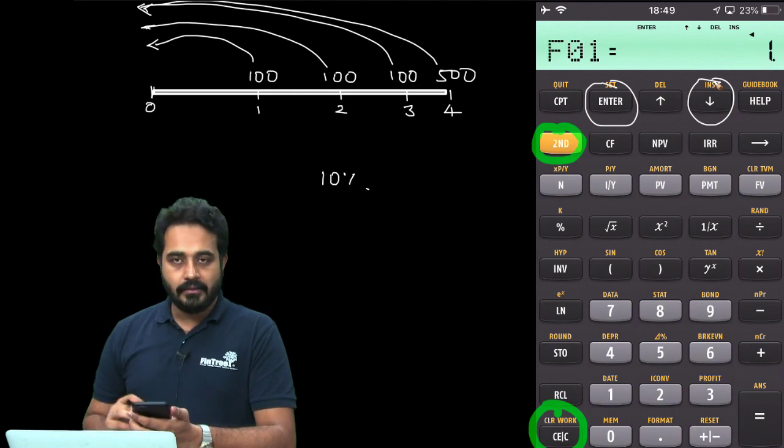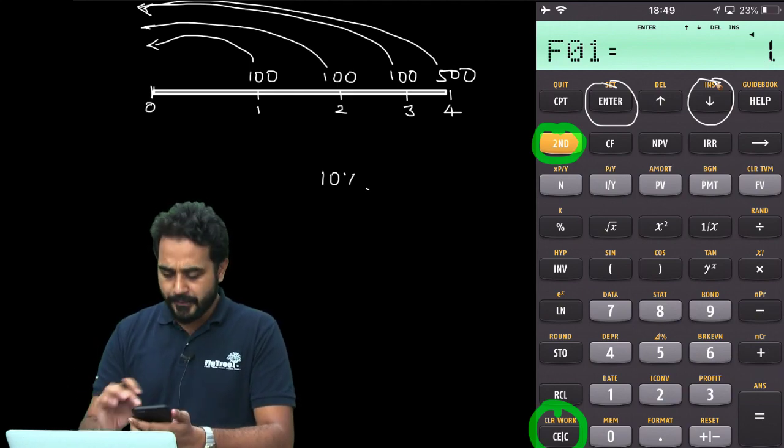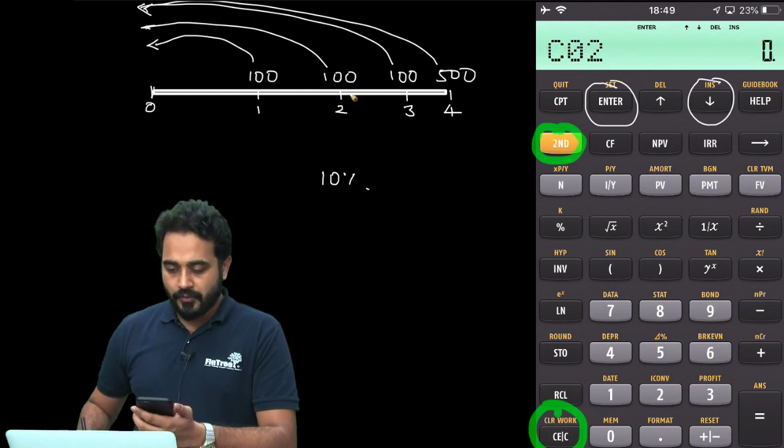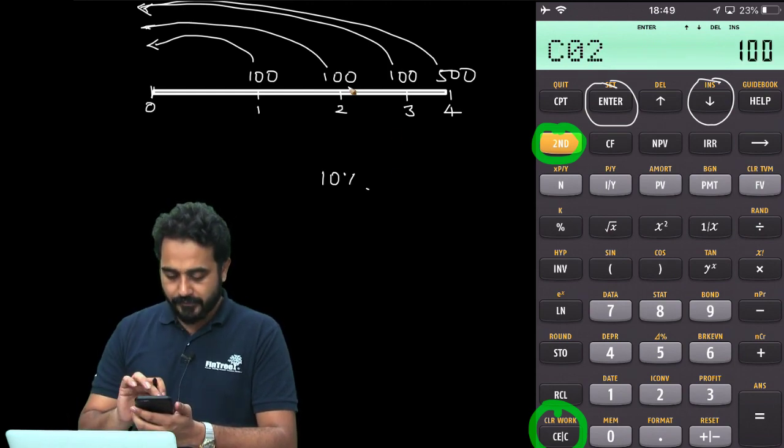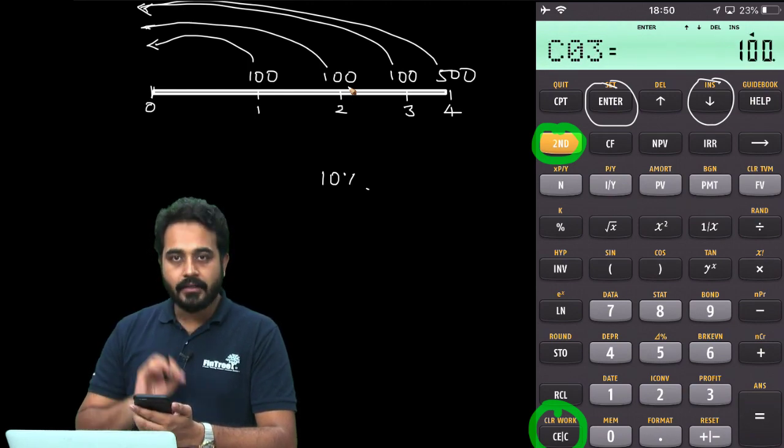Then I am going to press downward arrow again. It shows F01. I will talk about this in a bit. Downward arrow again, cash flow 2. So, that is 100, enter. Downward arrow twice, it shows cash flow 3, 100 again, enter.